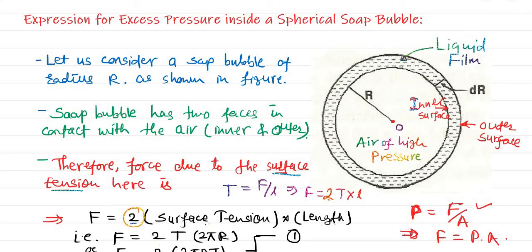So the force due to surface tension is 2T × 2πr, where 2πr is the circumference of the circular cross-section of this hemisphere of radius r. The circle has circumference 2πr, so the force due to surface tension equals 2T × 2πr.